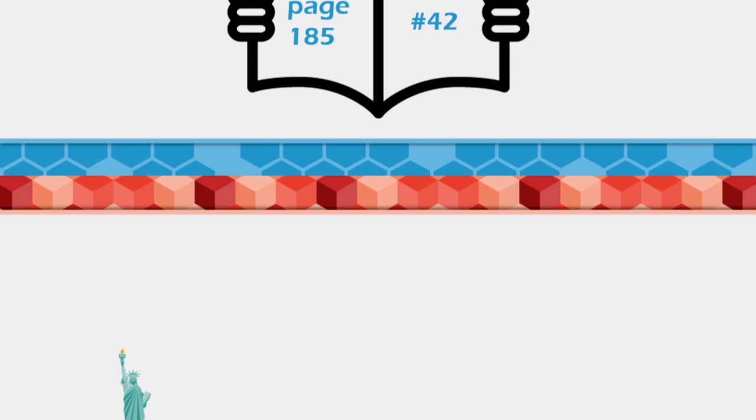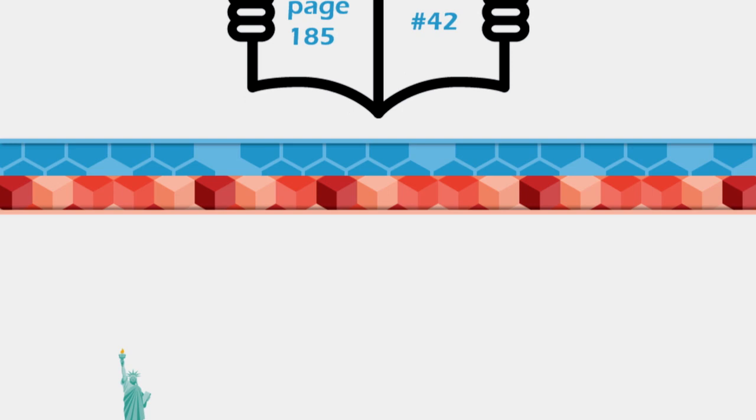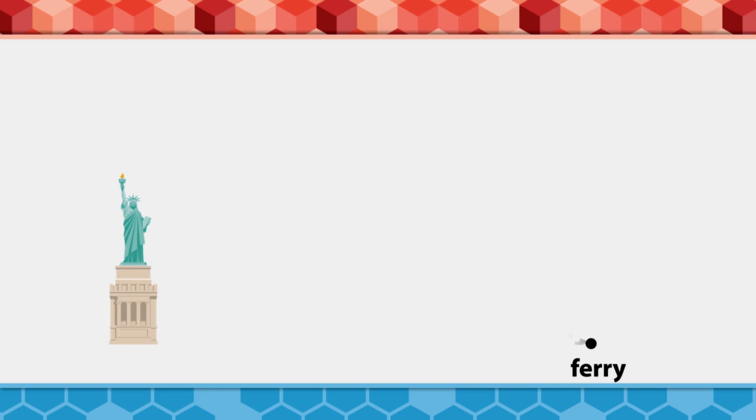Let's pretend you're on a ferry, and by using a device like an inclinometer, you determine that the angle of elevation to the top of the torch is 7 degrees, and the angle of elevation to the foot of the statue is 3.5 degrees. Now we have the information we need to answer question 42.